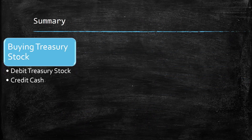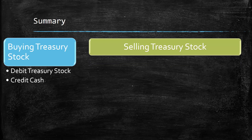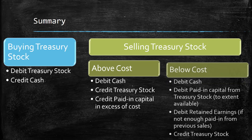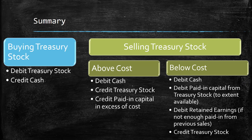So let's look at a summary. When they're buying treasury stock back off the market, you debit the treasury stock account and you credit cash. When they sell it above cost, you debit cash for the amount they sold it, credit treasury stock to remove it, and credit paid-in capital in excess of cost, which increases equity. If they sell it back below cost, you're still debiting cash and crediting treasury stock, but you're going to debit paid-in capital from treasury stock to decrease it, and if necessary, also debit retained earnings.